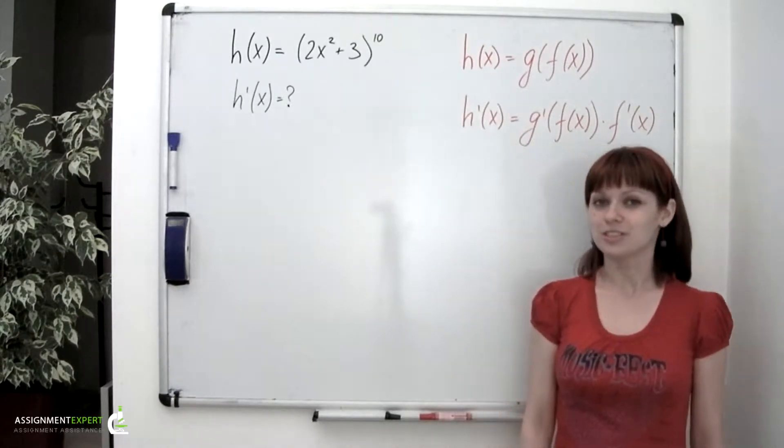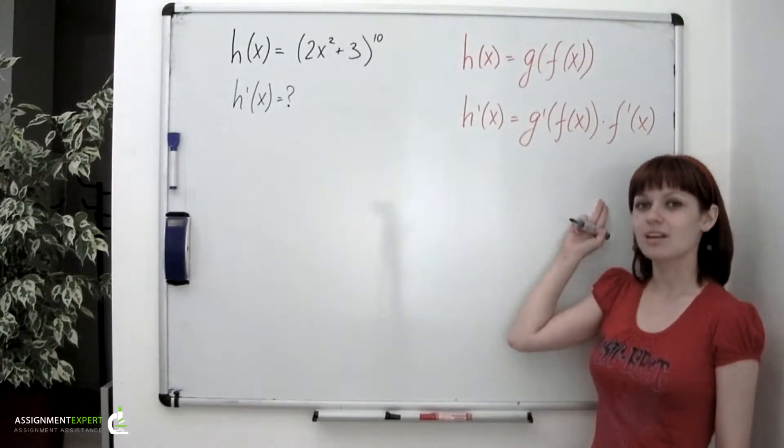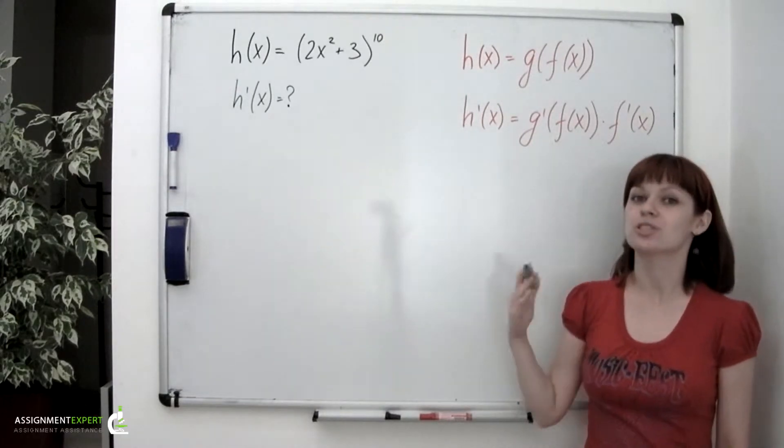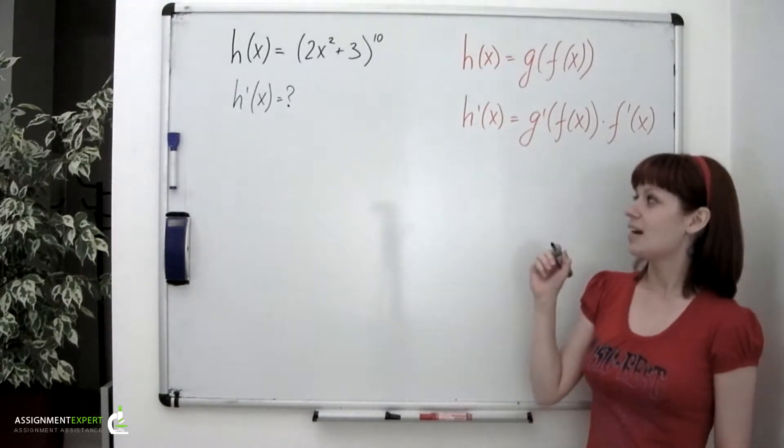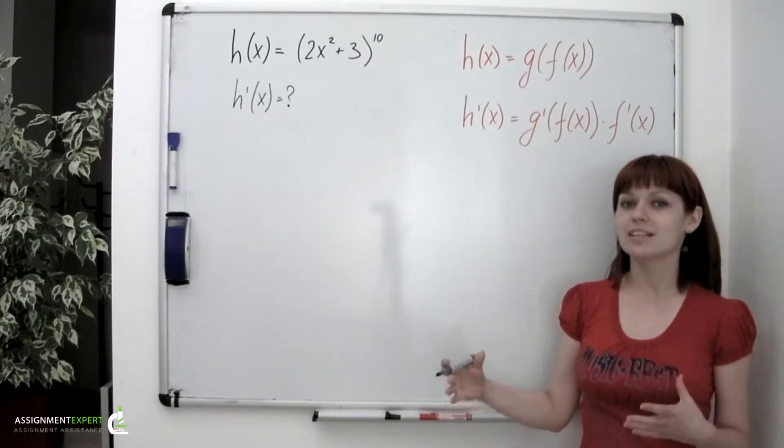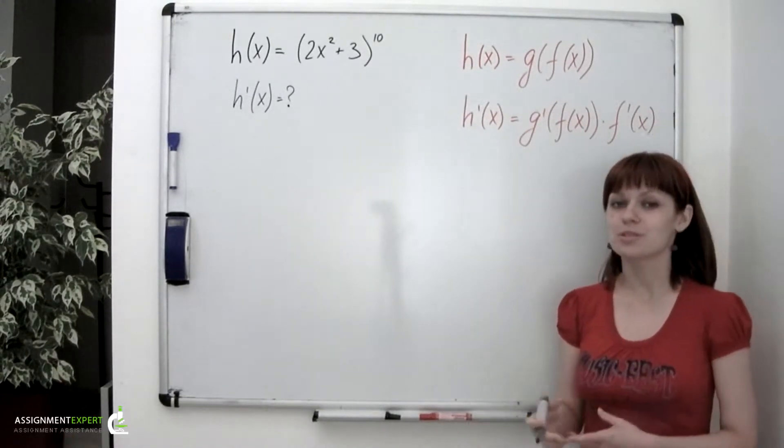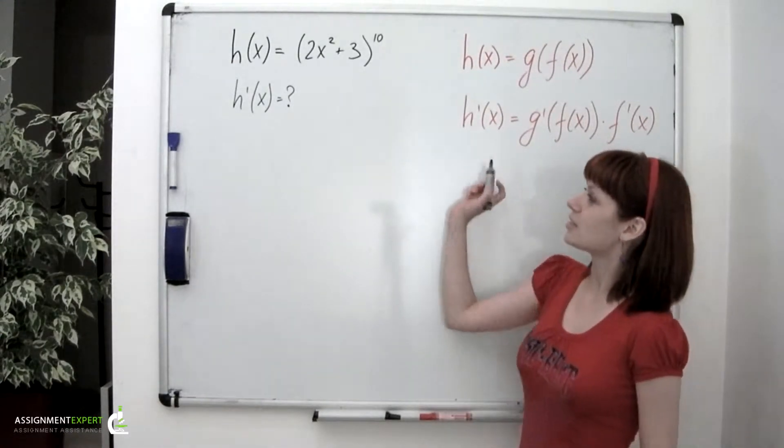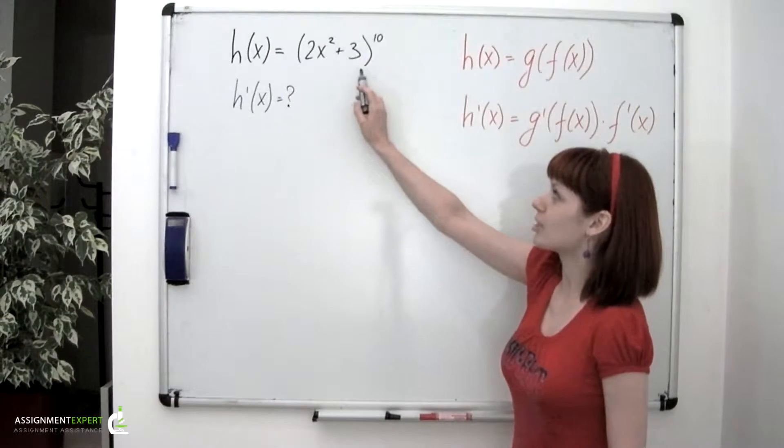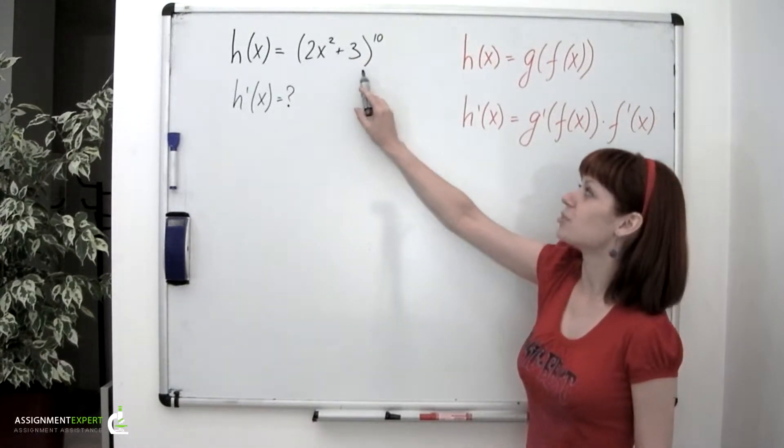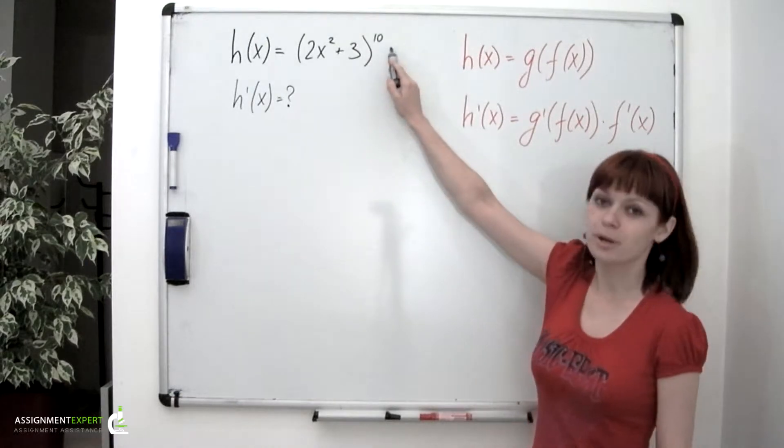We're going to use chain rule to do that. First of all, we should figure out which function is inside and which is outside. The idea is that you should pretend that you want to calculate this given expression at a certain point using a calculator. So we'll start with calculating this expression within the brackets and then we'll apply a calculator one more time to raise the obtained result to 10th power.